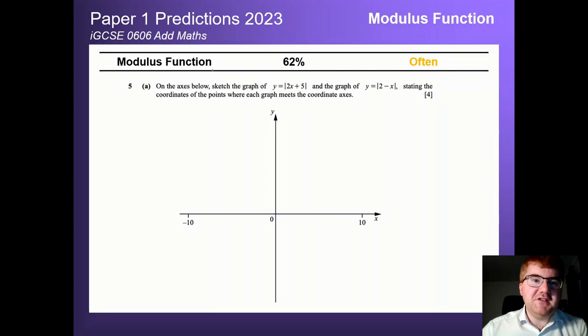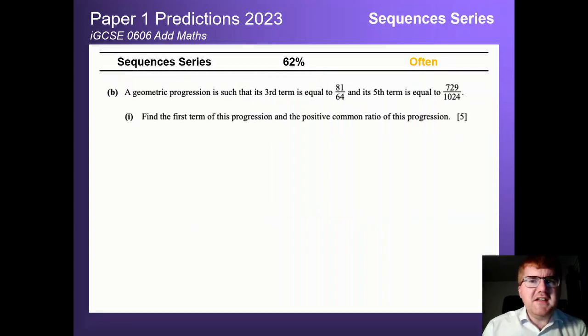First of all, Paper 1 predictions: the modulus function coming in at 62%, so coming up quite often and usually this is tied into some kind of graph sketching. Notice here they actually get you to sketch y equals the modulus of 2x plus 5, so be aware generally they'll test you on this sometimes with some equation solving as well. Sequences and series also pops in at 62%, comes up pretty often on paper 1 and does sometimes come up on paper 2 as well. Notice they use this word progression quite a lot, so you need to be looking at whether you're looking at a geometric progression or an arithmetic progression. That's going to change the kind of formulae you use for this kind of question.